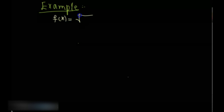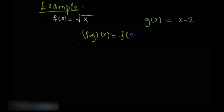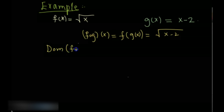Suppose we are given f(x) = √x and g(x) = x − 2. First, we are asked to find f composition g, that is f∘g. You can simply compose g inside f, which gives √(x − 2). The next question is: what is the domain of f∘g?